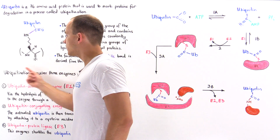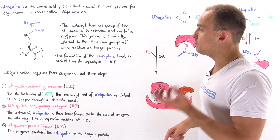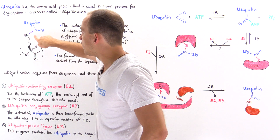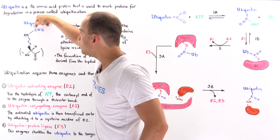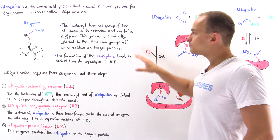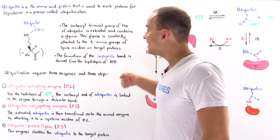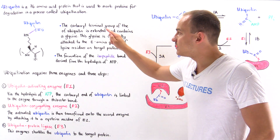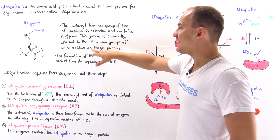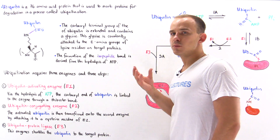Suppose this is our target protein, and this is the side chain group of a lysine residue. We use the nitrogen on the lysine side chain group to form a bond between that nitrogen and this carbon. This bond is known as the isopeptide bond. So the carboxyl terminal glycine residue of ubiquitin is covalently attached onto the epsilon amino group of lysine residues found on target proteins via this isopeptide bond.